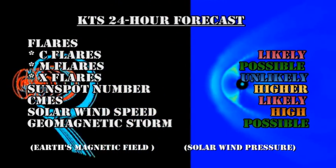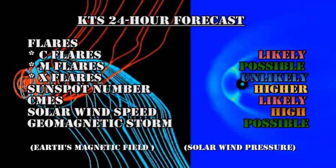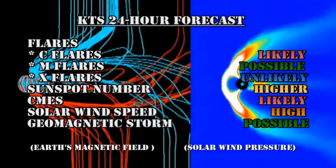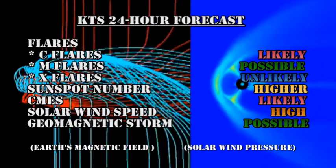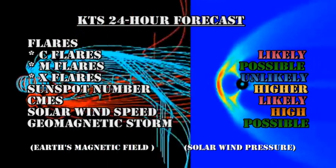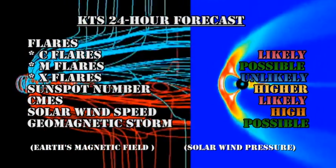My forecast for the next 24 hours is that C flares are likely, M flares are possible, but I think X flares are becoming increasingly unlikely. The sunspot number will probably ease higher. CMEs remain likely. The solar wind speed will remain high, and we still have a possibility of a minor geomagnetic storm.